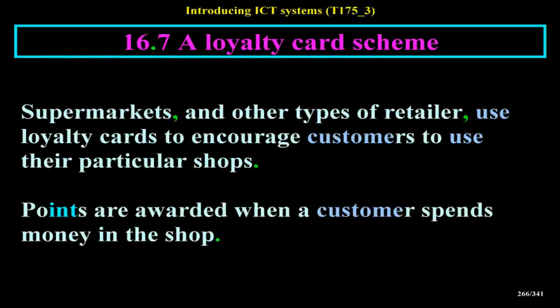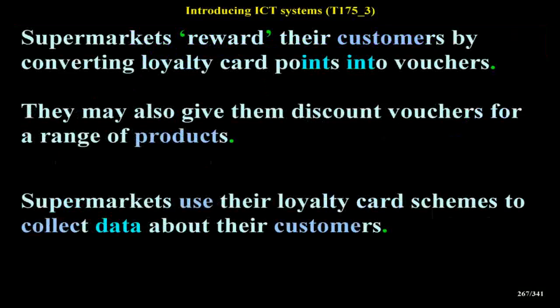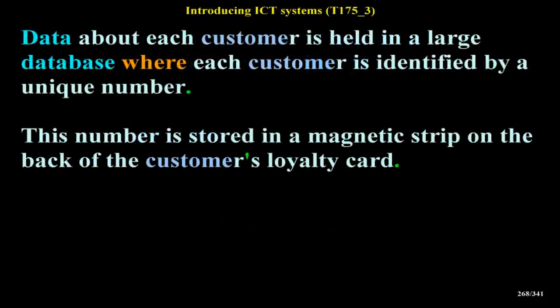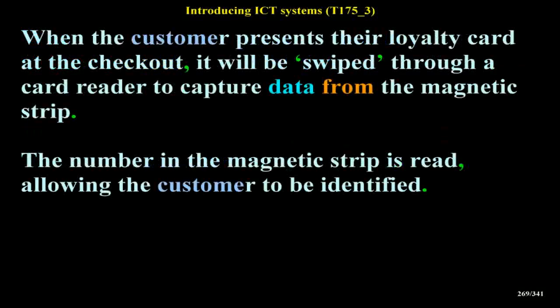A Loyalty Cards Scheme: Supermarkets and other types of retailer use loyalty cards to encourage customers to use their particular shops. Points are awarded when a customer spends money in the shop. Supermarkets reward their customers by converting loyalty card points into vouchers, and may also give them discount vouchers for a range of products. Supermarkets use their loyalty card schemes to collect data about their customers. Data about each customer is held in a large database where each customer is identified by a unique number — this number is stored in a magnetic strip on the back of the customer's loyalty card. When the customer presents their loyalty card at the checkout, their details are retrieved and their points updated.